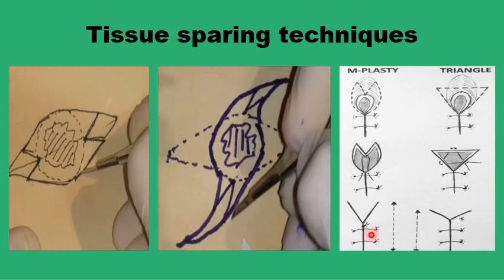The M-plasty is not the only tissue-sparing technique. In the previous presentation on avoiding dog ears, we discussed other ways to preserve tissue while avoiding dog ears, like the inverted triangle technique, in which two small inverted triangles are removed rather than the full ellipse. This ends up with a wound not dissimilar to the M-plasty shape.